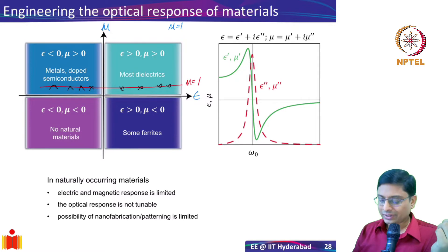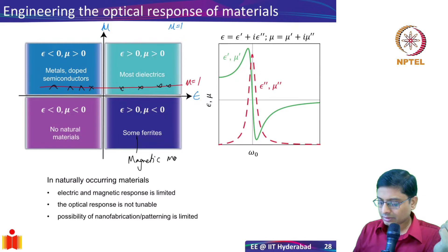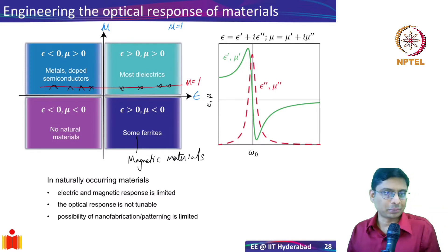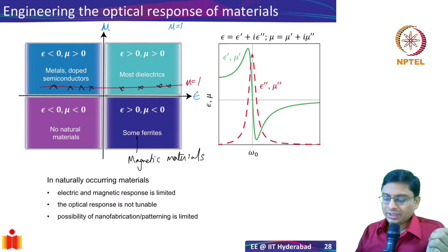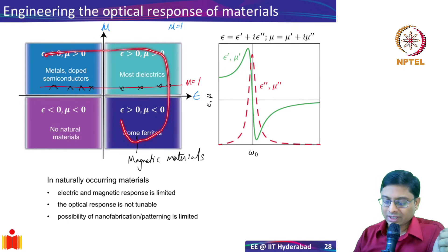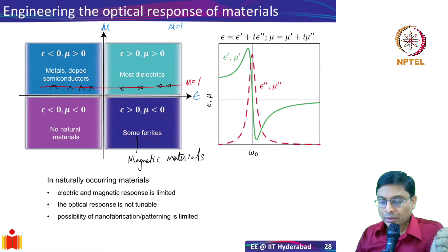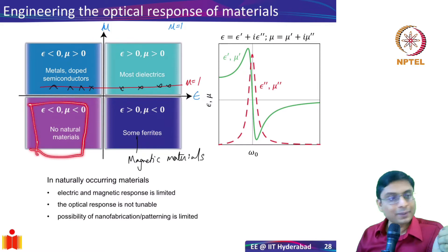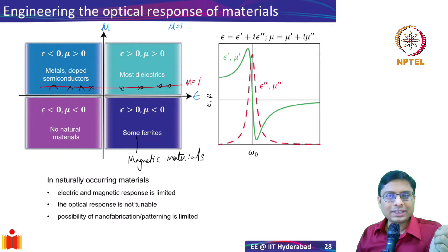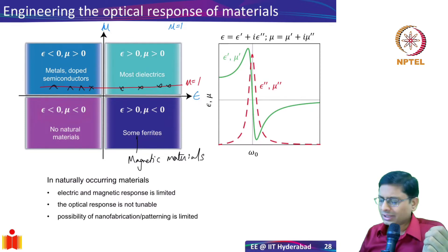In addition, we have some magnetic materials like iron, cobalt, and certain copper alloys which exhibit a magnetic response. So these three quadrants capture all naturally occurring materials. There are no natural materials which exhibit both negative mu and negative epsilon. If you are able to find materials with both negative mu and epsilon, you can find some very interesting applications.